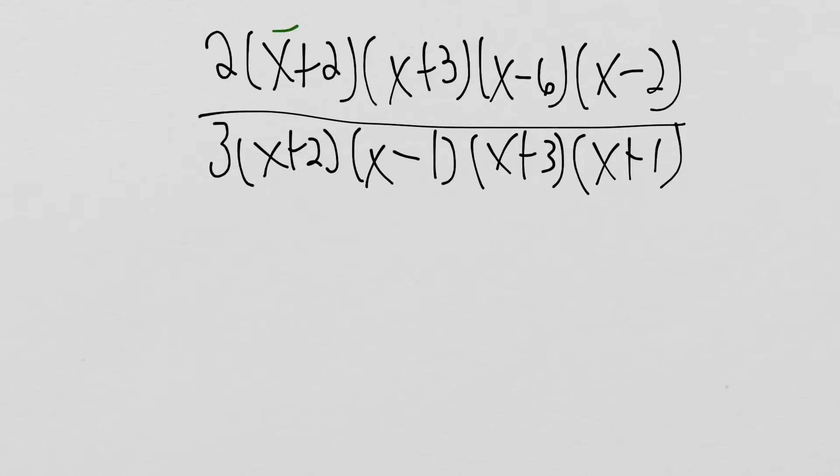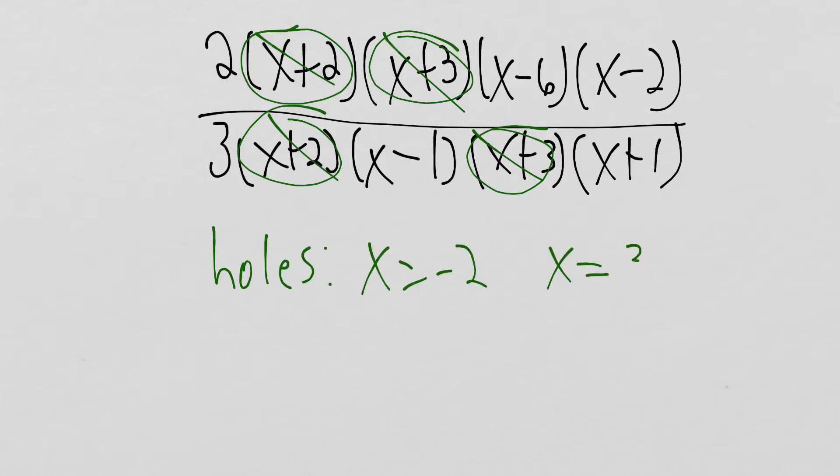So the first thing we should recognize is that we have an x plus 2 on top and an x plus 2 on bottom, and we also have an x plus 3 on top and an x plus 3 on bottom. So that tells us that we have holes at x equals negative 2 and x equals negative 3.